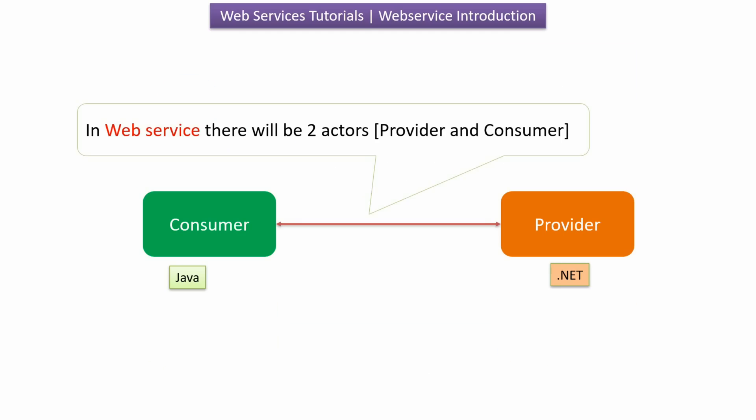In web service, there will be two actors: provider and consumer. Provider is the application that offers a service. Here you can see a .NET application — it provides some information or functionality, like giving current weather or processing a payment. Consumer is the application that uses the service provided by the provider. Here you can see a Java application — it asks the provider for information or to perform a certain task.